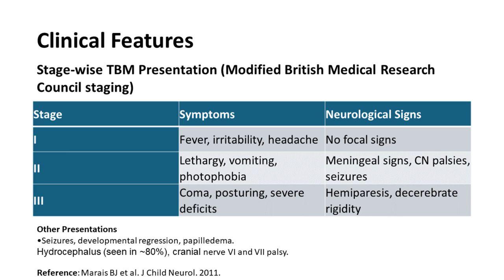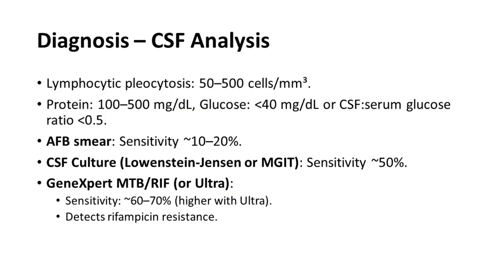When you suspect CNS TB, you want to do a CSF analysis, but before that always get an ophthalmology examination to rule out papilledema and signs of raised ICP. If these are present, do imaging first. If not, proceed with CSF. CSF typically shows lymphocytic predominance, high proteins, and low sugars. AFB on smear is rarely positive, but you can send GeneXpert Ultra or GeneXpert MTB/RIF assay to detect MTB and rifampicin resistance. CSF ADA is not well standardized in children, so prefer microbiological diagnosis.